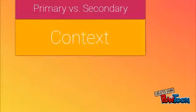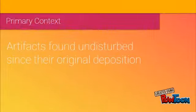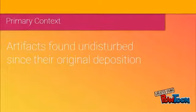Let's discuss primary versus secondary context. Artifacts discovered as being undisturbed since their original deposition are said to be found in primary context. Artifacts can be found in primary context in Pompeii.